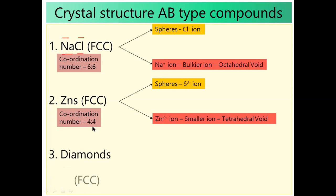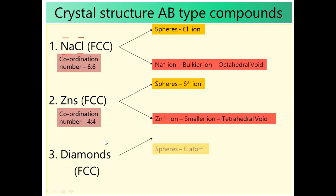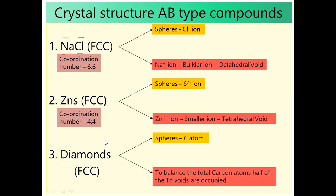The next structure is diamond. Diamond follows FCC structure, equivalent to ZnS. Instead of Zn and S elements, we write carbon atoms. In diamond, the sphere is carbon, and half of the tetrahedral void is also carbon. This is the structure of diamond.